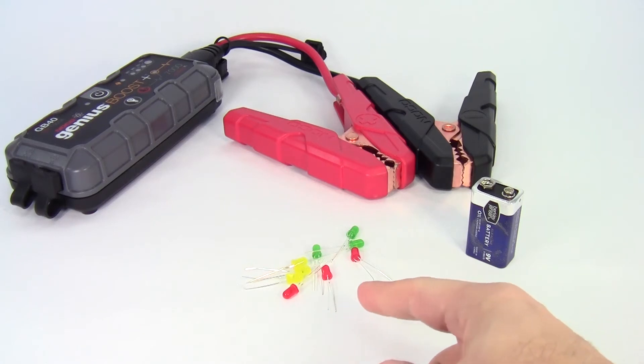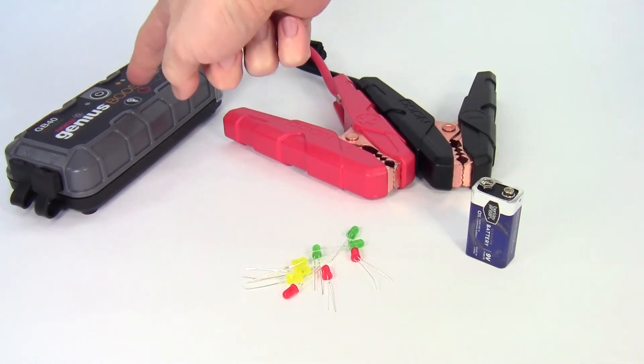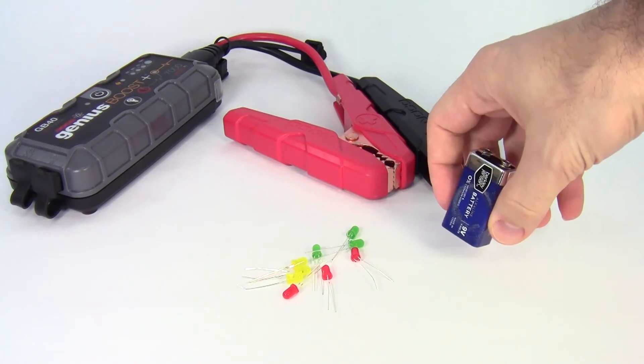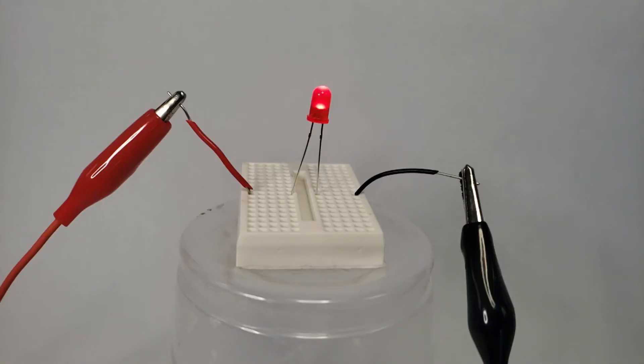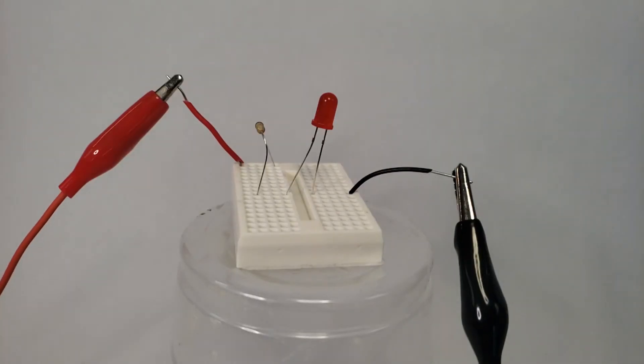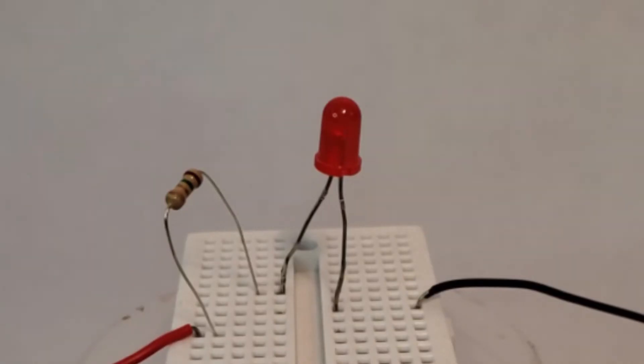I actually tried this for about a dozen LEDs using both this 12-volt car battery jumper and a much smaller 9-volt battery. As you can see in this montage of slow-motion LED burnouts, most of the time you'll just get a brief flash and then nothing. I only got one explosion and that was actually using the 9-volt battery.